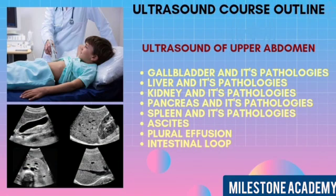In ultrasound of the upper abdomen, we will learn gallbladder and its pathologies, liver and its pathologies, kidney and its pathologies, pancreas and its pathologies, spleen and its pathologies, ascites, pleural effusion, and intestinal loops.